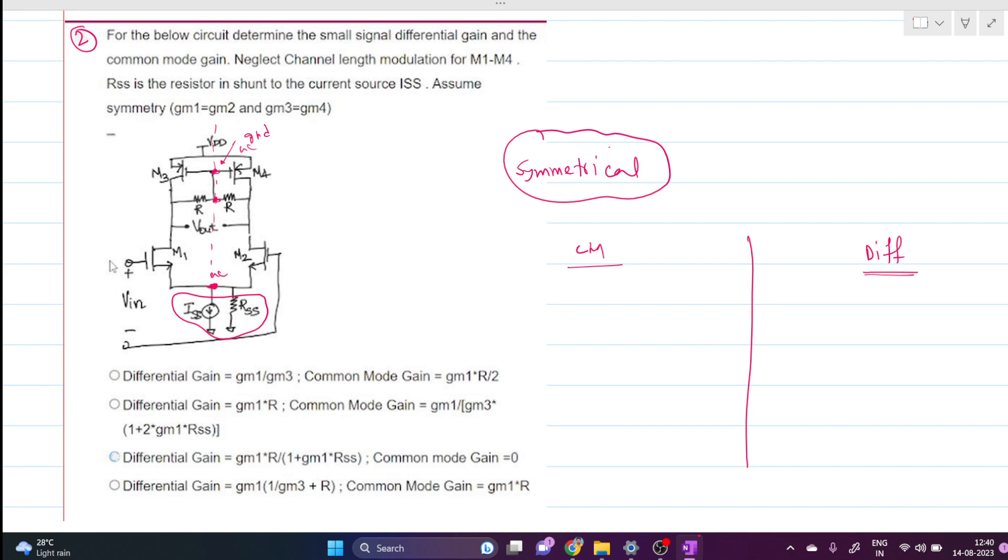For differential input, our circuit reduces to the following circuit. Here we have PMOS connected with the resistance. This is small signal ground, this is small signal ground, and this is also small signal ground. We have this Vd.